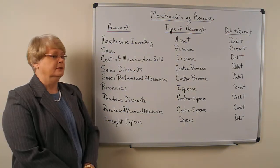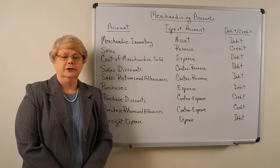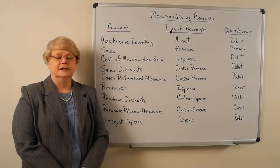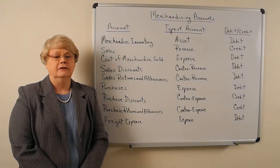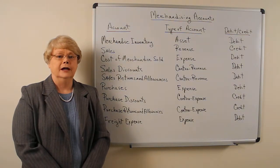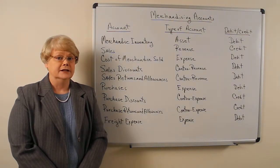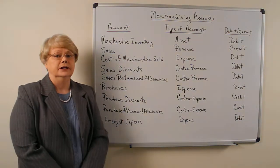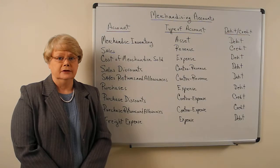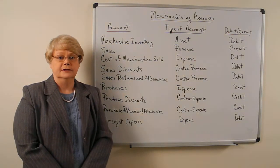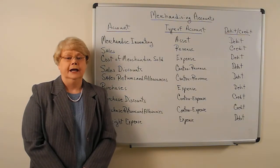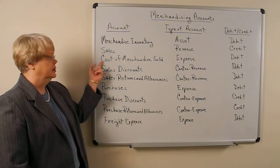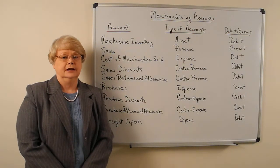Let me talk a little bit about the difference between a perpetual and a periodic inventory system. In a perpetual inventory system, we're keeping a record of inventory at all times. Therefore, every transaction that relates to inventory will actually go through the merchandise inventory account. We will increase it when we purchase inventory and decrease it when we sell inventory. Also, when we sell inventory under a perpetual system, we will use the cost of merchandise sold account.